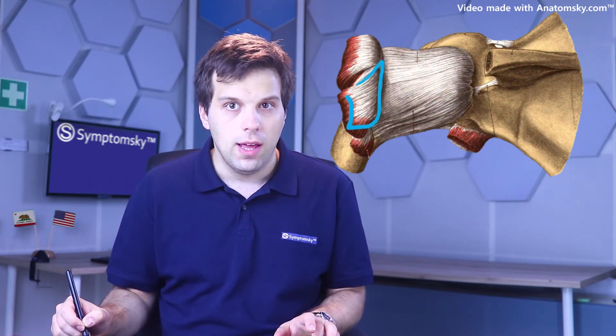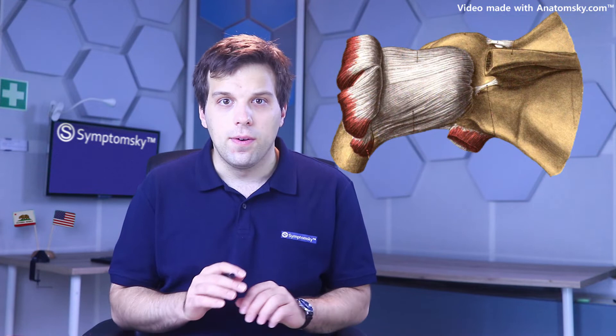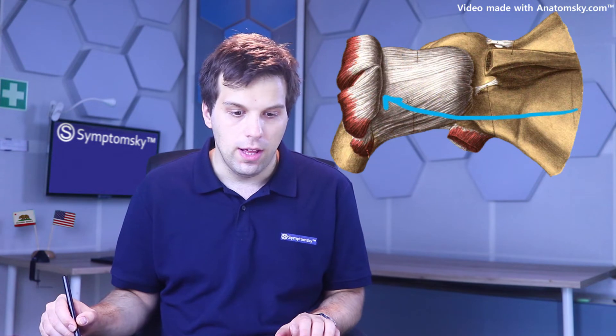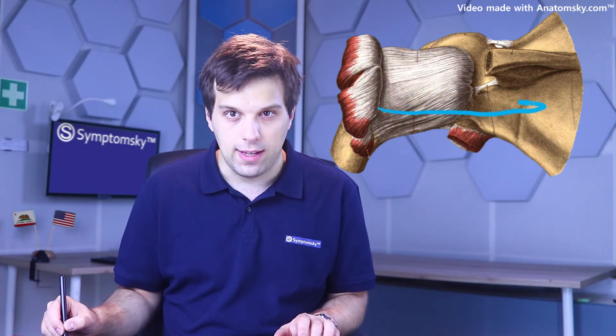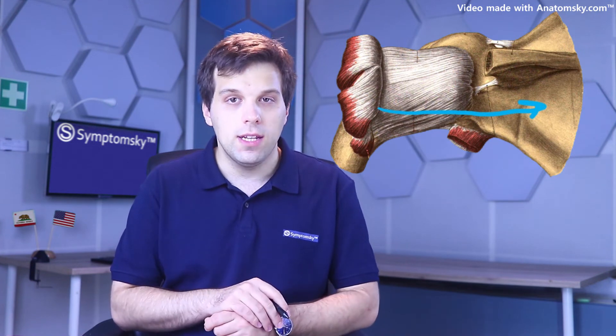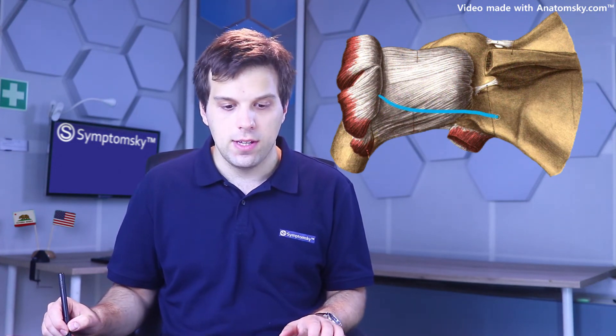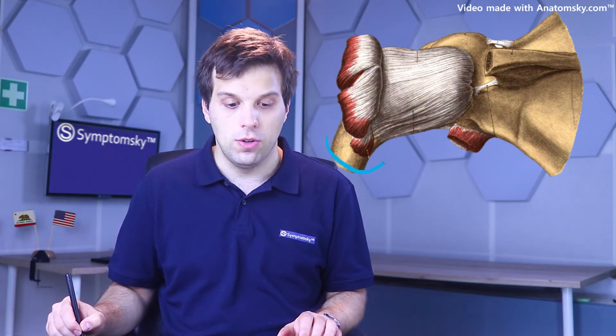Now if we look closely, there is another muscle over here — that is the infraspinatus muscle. The infraspinatus muscle has its origin below the spine of the scapula, that's why it's called the infraspinatus muscle. Now the infraspinatus muscle does not attach from above, but attaches somewhat from the side. Therefore when this muscle contracts, it performs a different type of movement — it normally performs the external rotation of the arm.